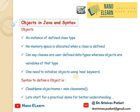Let us see what objects are in Java and the syntax. What is an object? Basically, objects are instances of a defined class type. No memory space is allocated when a class is defined. Classes are user-defined data types, whereas objects are variables of that specific type. One needs to initialize objects using the new keyword. The syntax looks like: ClassName objectName = new ClassName.